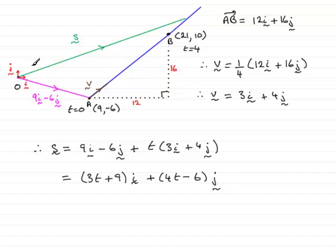And that gives us what we're asked to show, the position vector of the ship at any time T.